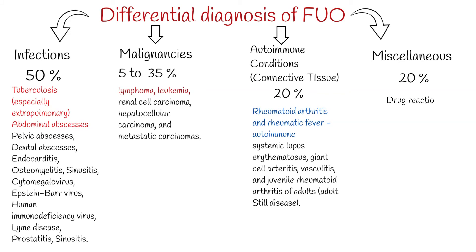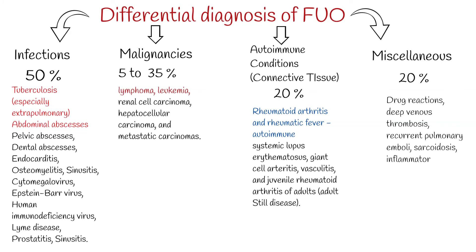Important miscellaneous causes include drug reactions, deep venous thrombosis, recurrent pulmonary emboli, sarcoidosis, inflammatory bowel disease, and factitious fever. No cause of FUO is identified in about 10% of adults. In patients who have had contact with pets or other animals, diseases common to animal handlers must be suspected. The family history should be carefully scrutinized for hereditary causes of fever, such as familial Mediterranean fever.